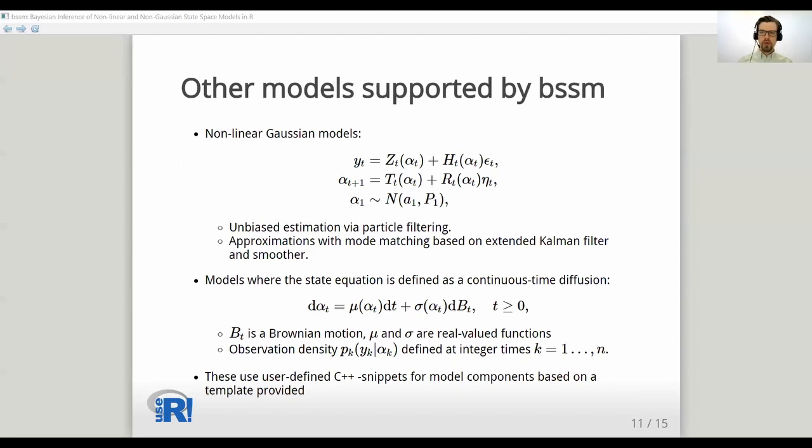In addition, bssm also supports two model types, nonlinear models and models where the state equation is defined as a continuous time diffusion. For the nonlinear Gaussian model, the approximation is based on mode matching using extended Kalman filter and smoother. For models where the state equation is defined as a continuous time diffusion, we assume that we have observations at integer times. The approximation is related to the coarseness of the time discretization mesh.